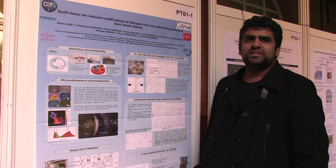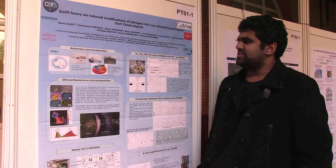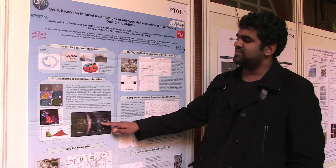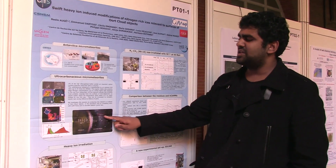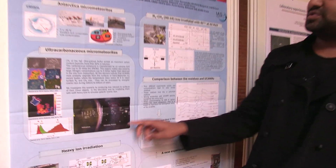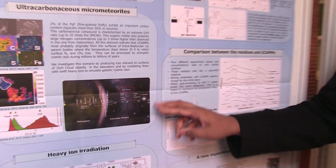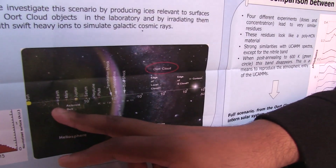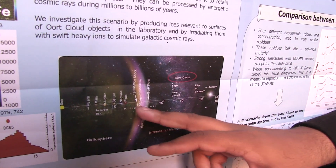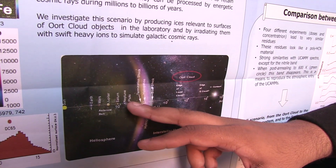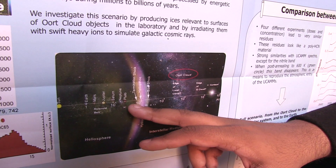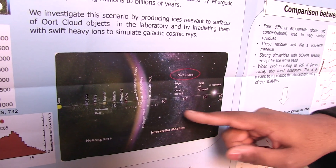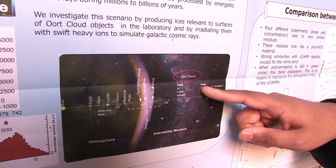For this, they made a scenario, and the scenario implies that we have an object which is living in the Oort Cloud. Here you have a map of the solar system. The Sun is here, Earth is here, here you have the main belt, then you have Neptune and then Pluto. Here you have the Kuiper Belt, and if you go further you will reach the Oort Cloud.